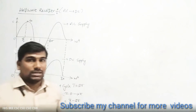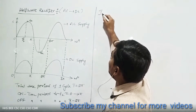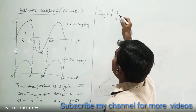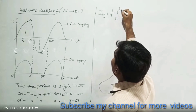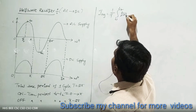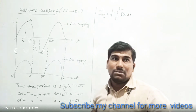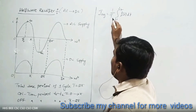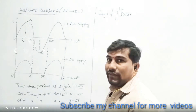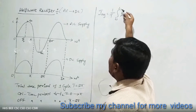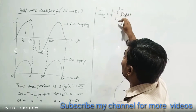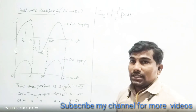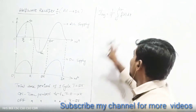I_average is equal to — what is the formula? One by T, integration of t1 to t2 of f(t) dt. This is the normal alternating quantity formula for average value. Capital T is the total time period of the cycle — for the output waveform that is T equal to 2π. So I_average equals one by T, integration of t1 to t2 of f(t) dt. This is the normal average formula; we substitute these total terms into I_average.